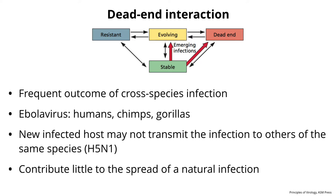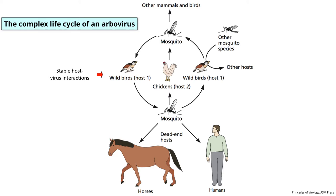The last outbreak of Ebola had something like 28,000 cases — the biggest by far — but this is not something that is going to infect most of the world. The virus simply isn't adapted enough to people. Let's look at a couple of life cycles that reflect these principles.